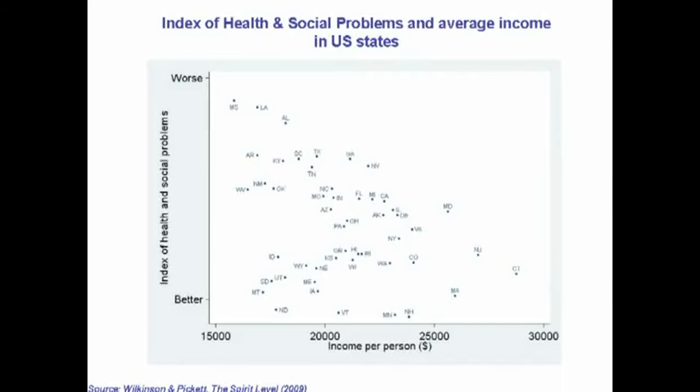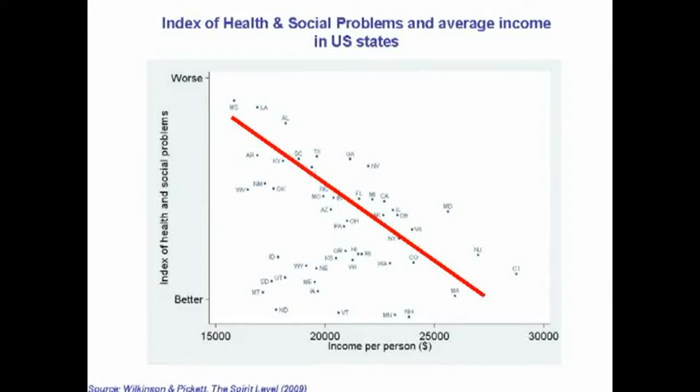Here's the same index in relation to income per person. There's a slight trend for fewer social problems in richer states, but we think that's probably because income within states is actually measuring how states are doing in relation to the nation as a whole. And the USA, of course, is a very unequal place and was doing badly on all these things.